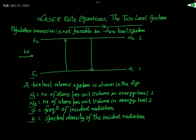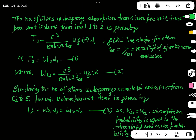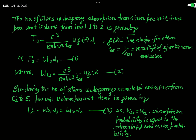There is an interaction between the atomic system and the electromagnetic radiation, and three phenomena take place. We will find the probability rate of these three possible processes. The number of atoms undergoing absorption transition per unit time per unit volume from level 1 to 2 — that is, the number of atoms which absorb the radiation and get excited from level 1 to level 2 — this probability rate is denoted by gamma 1 to 2, equal to C³ over 8π h nu³ times T_SP times U times g(nu) times N1.